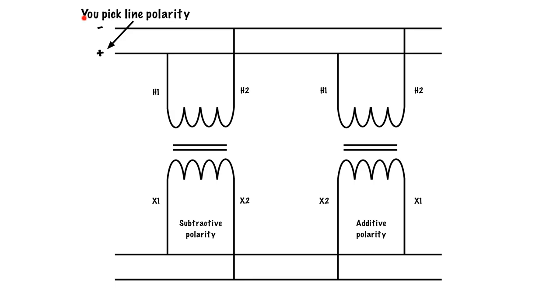So right now, for this example, again, negative on the top, positive on the bottom. Now, when you pick the line polarity, the line polarity ends up determining the primary winding's polarity.